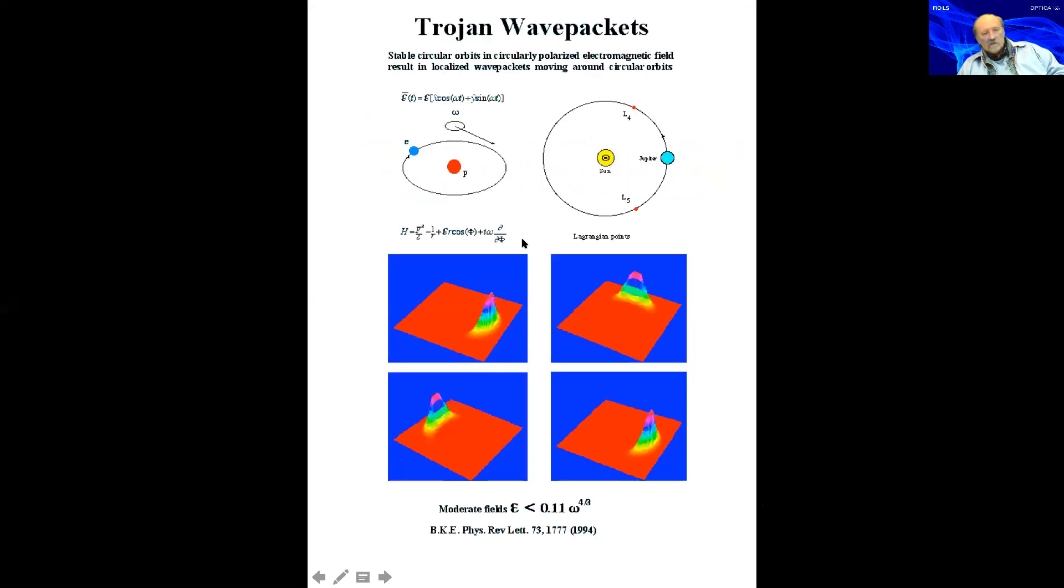Let me make a brief introduction. What are the Trojan wave packets themselves? They are solutions of the Schrödinger equation of the hydrogen atom in the circular depolarized field. What is so interesting is that the probability density of the electron in this solution is invariant in shape and moving with the same shape around the circular trajectory.